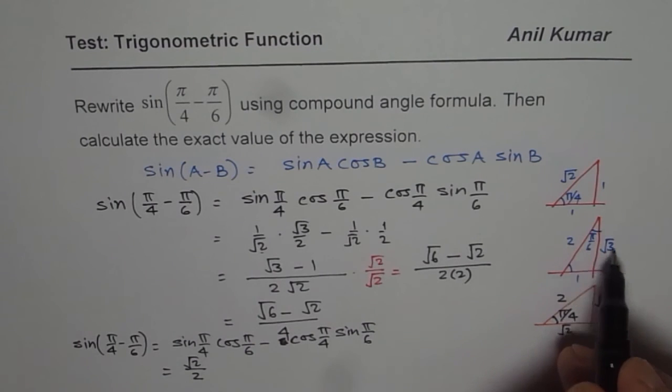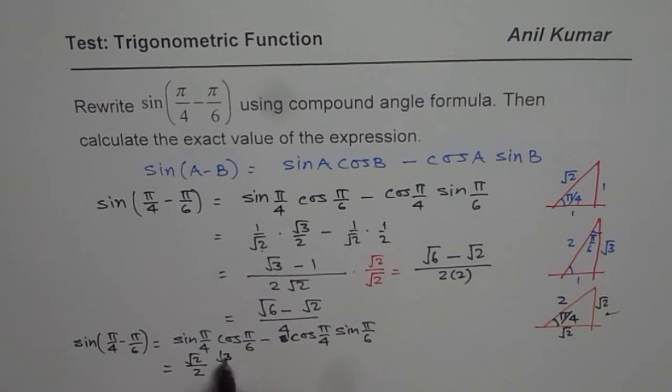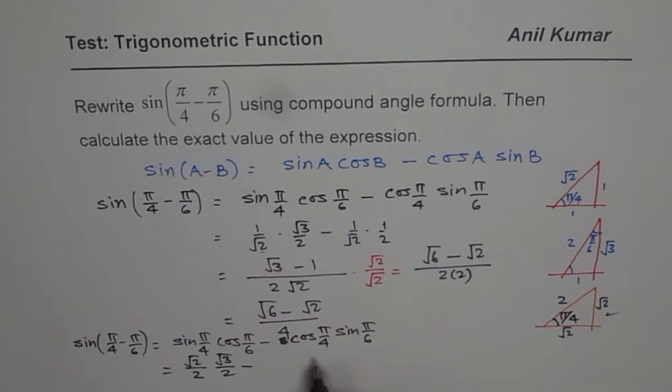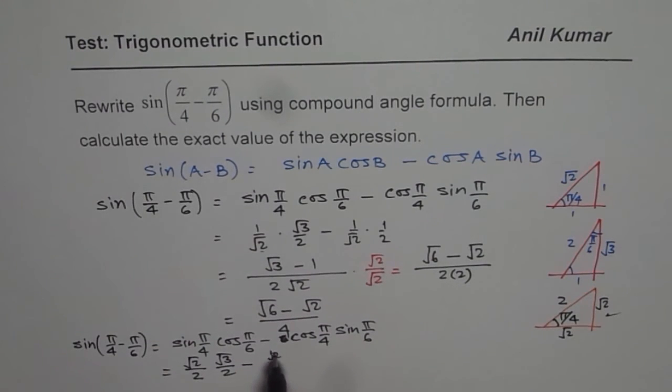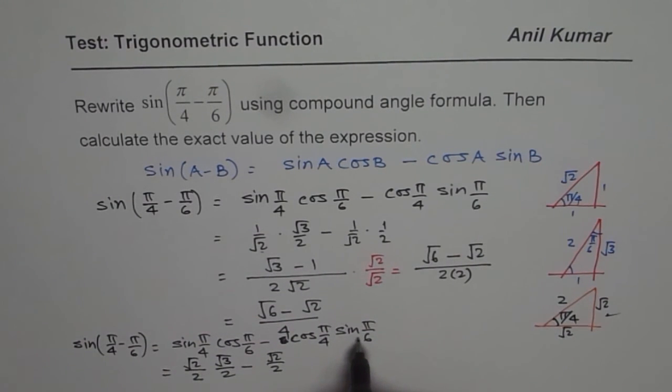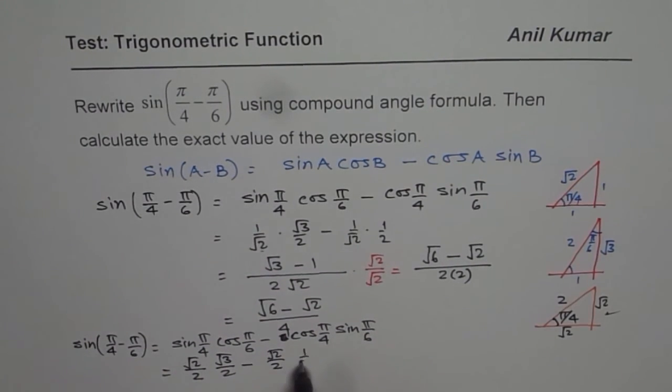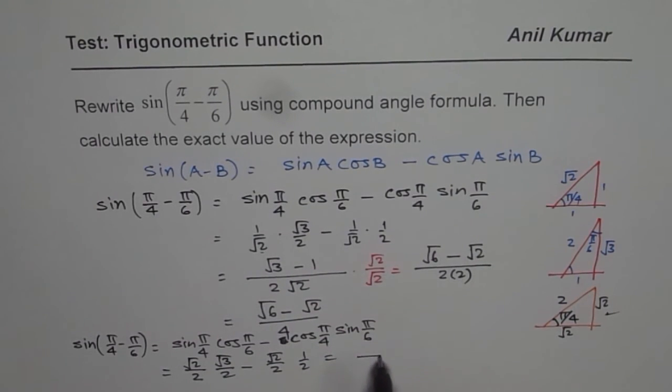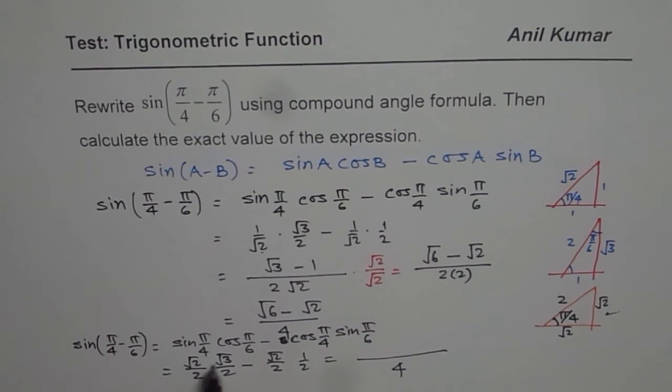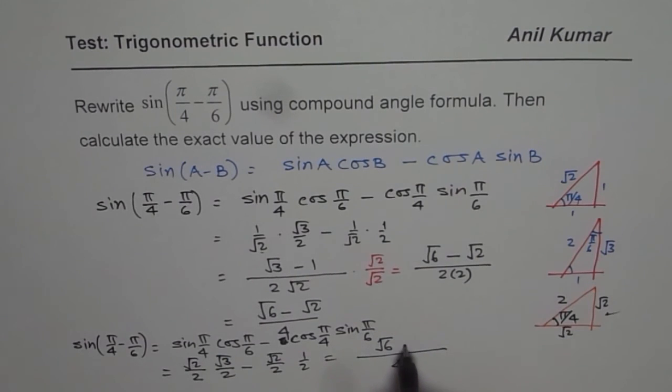π/6 for cosine is √3 over 2, minus cos(π/4) is √2 over 2, and sin(π/6) will be half. So now you see common denominator is 4 and then we get (√6 - √2) as our answer.